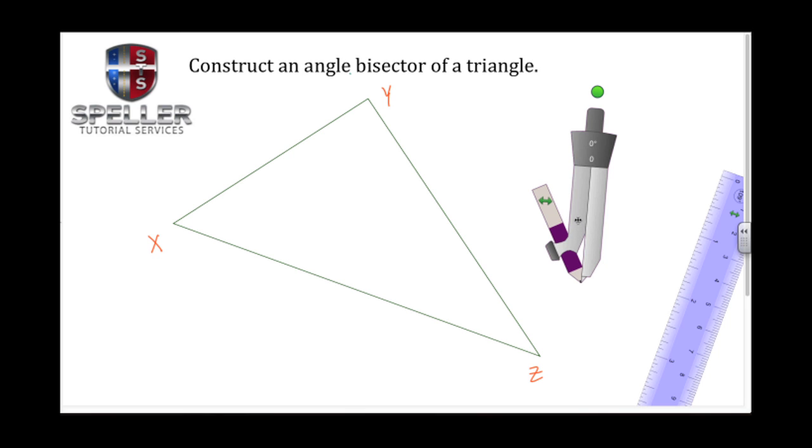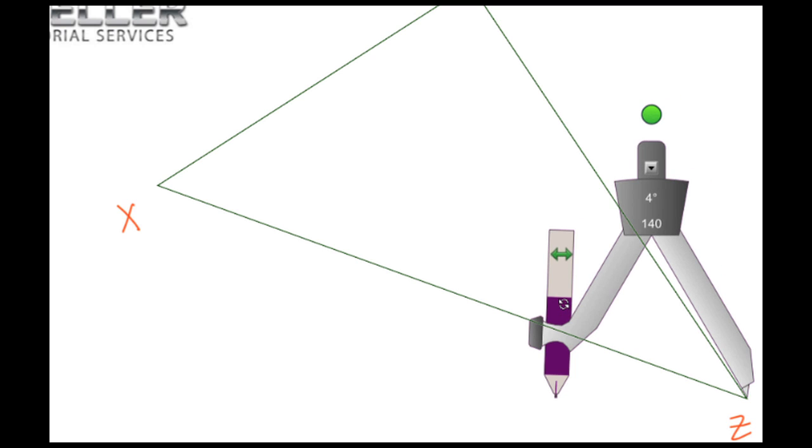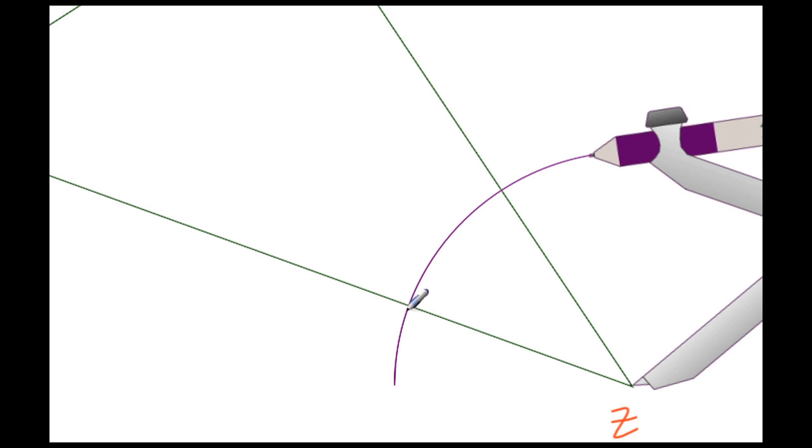Begin by setting your compass to an arbitrary radius, placing the point here on vertex Z, and then making sure you draw an arc that's going to actually cross at two different places, creating two intersections. I'm going to label these intersections A and B.